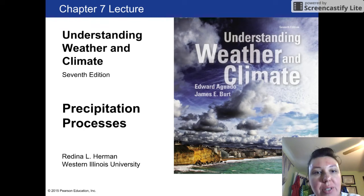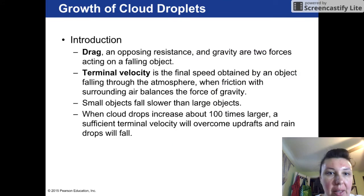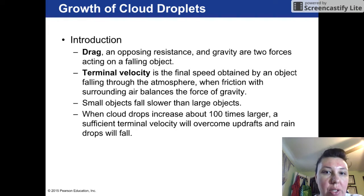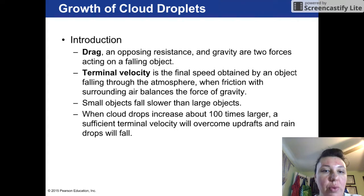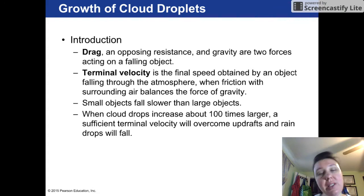Hi, welcome to Module 6, and we're going to be talking about the precipitation process. As a quick introduction to cloud droplets, two key terms you need to keep in mind are drag, which is the opposing resistance, and gravity — the two forces that are acting on the falling object.